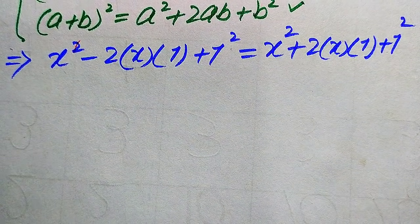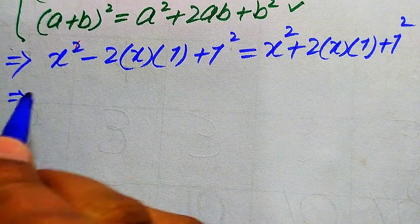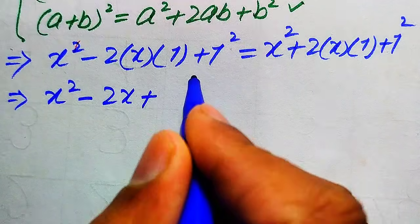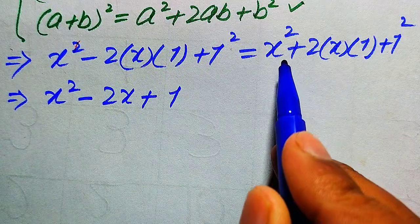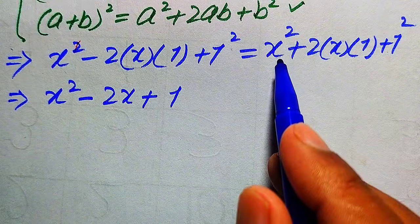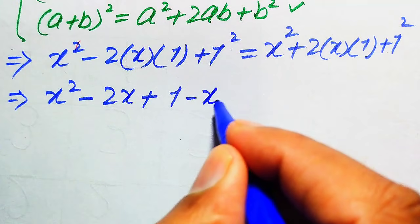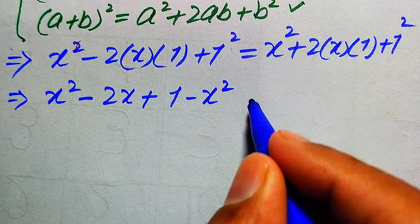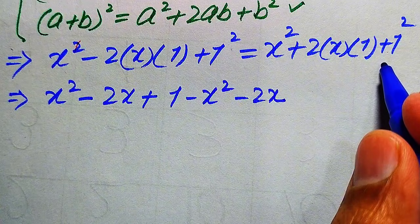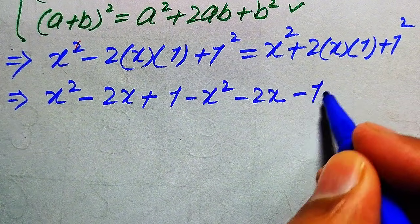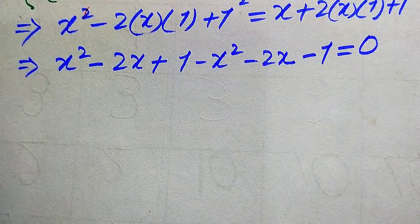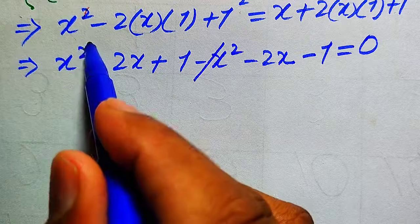Simplifying: x² - 2x + 1 = x² + 2x + 1. Moving all terms from the right-hand side to the left, we get: x² - 2x + 1 - x² - 2x - 1 = 0. The x² terms cancel and the constant terms cancel.